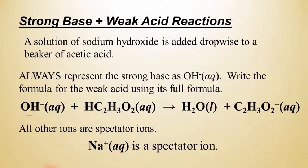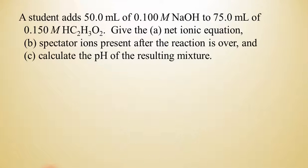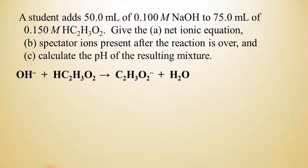Let's work a more complex problem here using this example, and we're going to take a case where a student adds 50.0 milliliters of 0.100 molar sodium hydroxide solution to 75.0 milliliters of 0.150 molar acetic acid. We're going to give the net ionic equation, which we actually already just wrote that. We're going to talk about the spectator ions, and hopefully you realize that sodium is still the spectator ion.